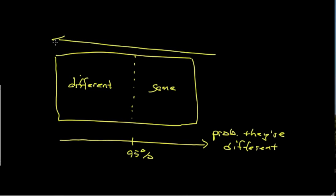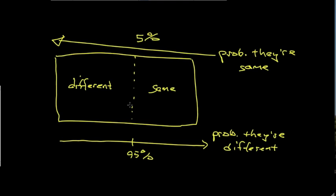Well, if that's true, this line might represent the probability that they are the same. If we draw the line at 95%, that they are different, the probability that they are the same is 5%.